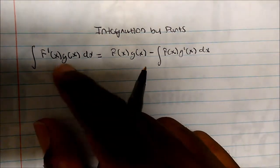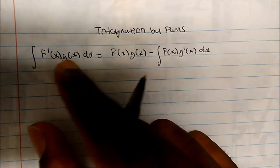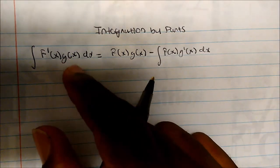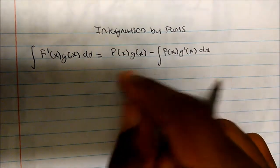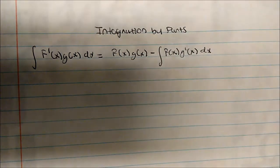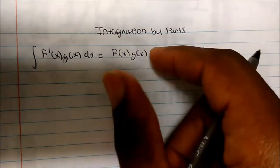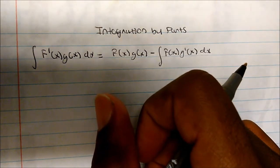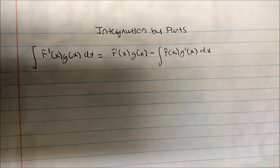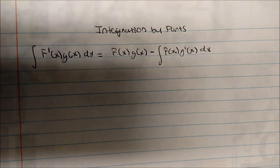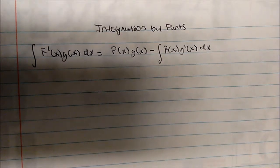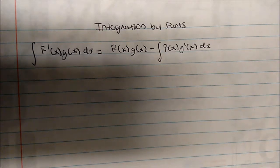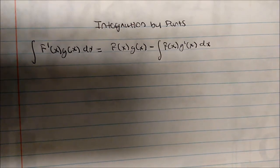The idea is that if we have some sort of integral where functions are being multiplied, we treat one as a derivative and we treat one as a regular function, and we follow this pattern. This is the general notation I'm used to — f of x, g of x — which makes sense from college algebra and high school. If your teacher teaches it with u and v notation, no problem; we should get the same answer in the end.